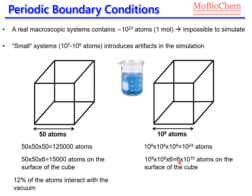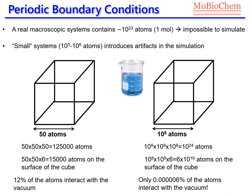If we do the same calculation as we did before, we will have 6 multiplied by 10 to the power of 16 atoms on the surfaces of the box, which is a very huge number, but is small in comparison with the total number of atoms. Indeed, if you do the calculation, we have only 6 multiplied by 10 to the power of minus 6 atoms interacting with the vacuum. So only a very small percentage of atoms in our system are surrounded by vacuum, while in our simulation a large amount of atoms are interacting with vacuum.